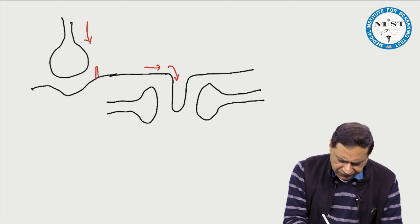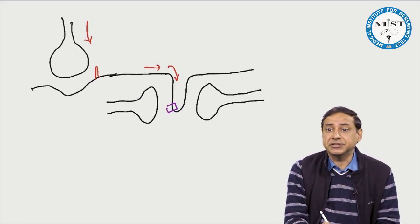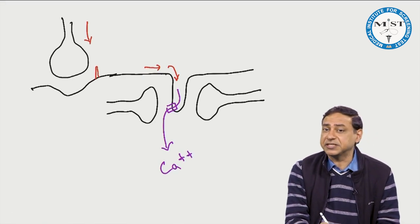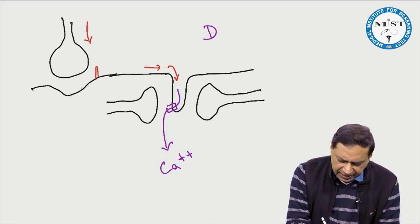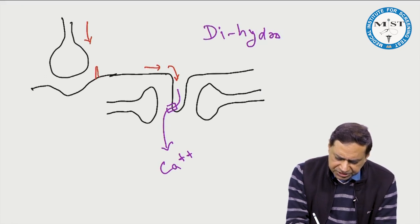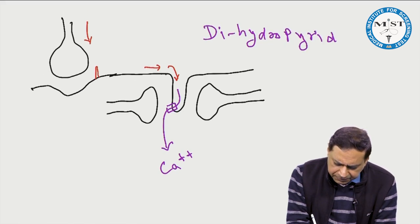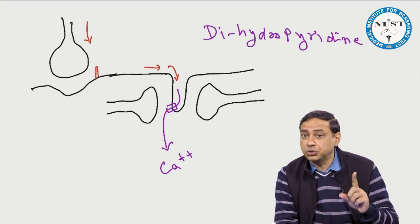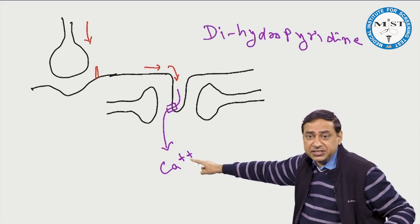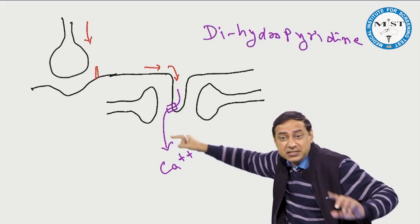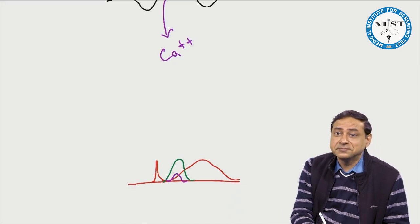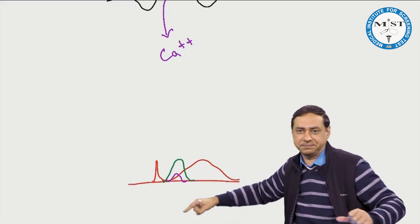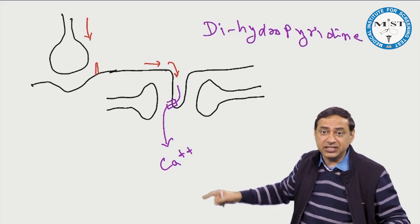In the T-tubule, we have voltage-gated calcium channels known as dihydropyridine receptors. These are nothing but voltage-gated calcium channels present in the T-tubule. However, the calcium coming from this source is a very small amount — not sufficient to generate the twitch.